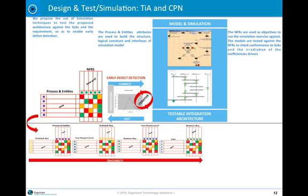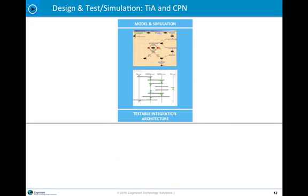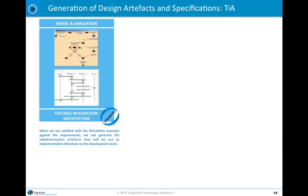But we don't stop there because once we've got a model, functional and non-functional, of what is supposed to be built and we're sure that that meets the requirements because we've tested them, we can go to the next step. What we can do here is we can generate the artefacts because this is now a validated model. We can generate the artefacts which minimize defect injection. These artefacts are the very same artefacts that are used to drive development.